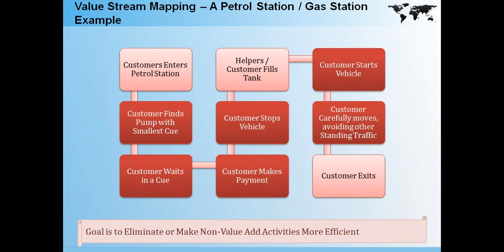Making non-value-add activities more efficient does not necessarily decrease the number of steps in the flow. For that, we need more innovative ideas. For example, we could have a McDonald's or a Subway in the petrol station and the customer would have their meal while the attendant fills up their petrol. Or there could be an online petrol-filling process where the customer pays and defines the amount of petrol required and a time when the attendant would come to their place and fill the tank — instead of the customer coming to the station and waiting in the queue.